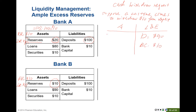Because of the balance sheet identity, assets always equal liabilities and equity. When a customer withdraws cash, the bank uses money in its reserve to meet the withdrawal request. As a result, Bank A's reserve also reduces by $10 — from $20 to $10. Loans remain at $80 and securities remain at $10.